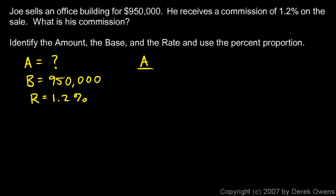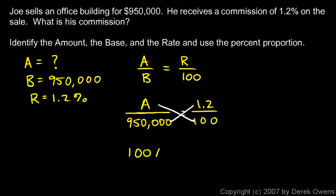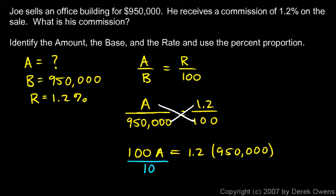We can solve the problem by setting up the percent proportion: a over B equals r over a hundred. Putting in all the numbers we know: B is nine hundred and fifty thousand, r is one point two, and a hundred stays a hundred. A is what I don't know, so I left it as a variable. Cross-multiplying gives a times a hundred equals one point two times nine hundred and fifty thousand, so 100a equals 1.2 times 950,000.